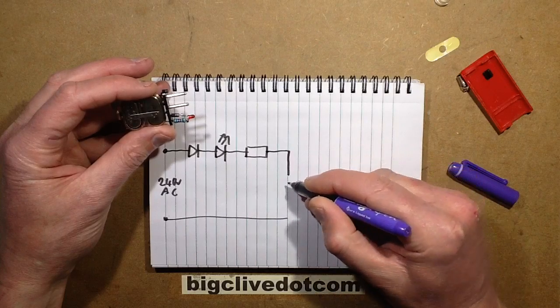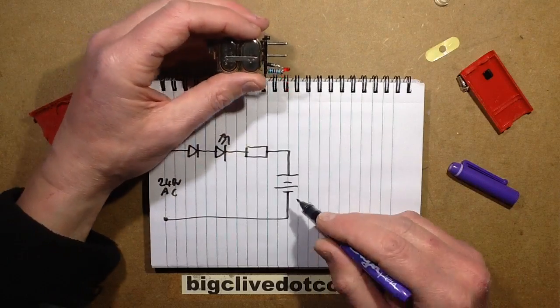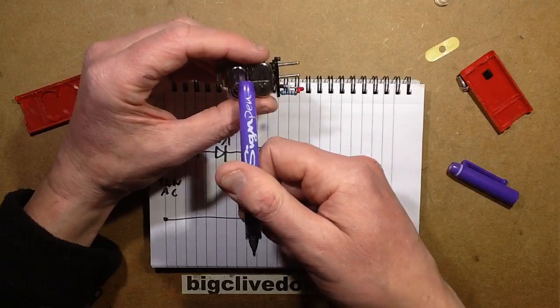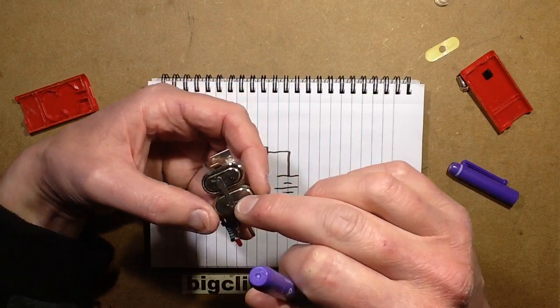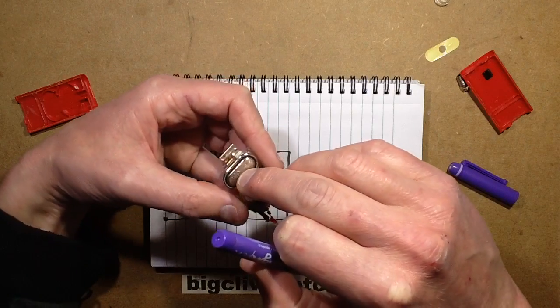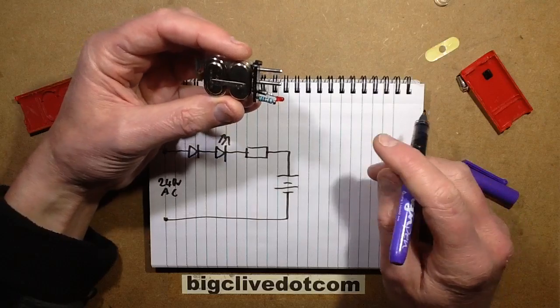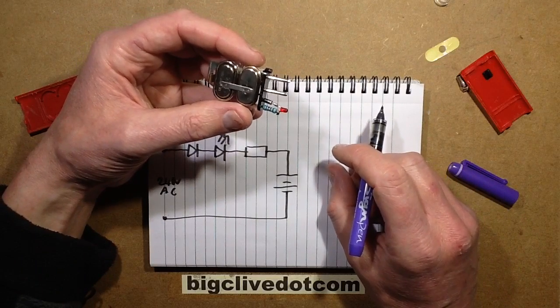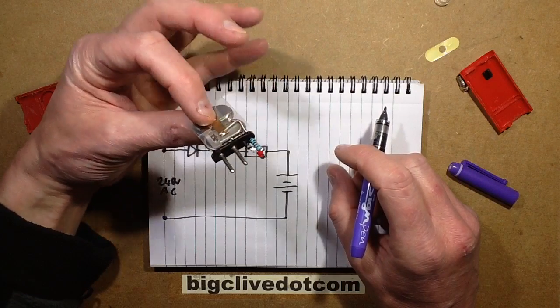And then to the nickel metal hydride cells - nickel cadmium cells I should say. It's so hard to get out of that habit. It's so rare to find nickel cadmium cells these days. These ones do look a bit fluffy around the edge - actually they're not too bad, it doesn't look that bad. Given how old this is - 1980s, it's now 2016 - best part of heading for 40 years old. Not bad at all.